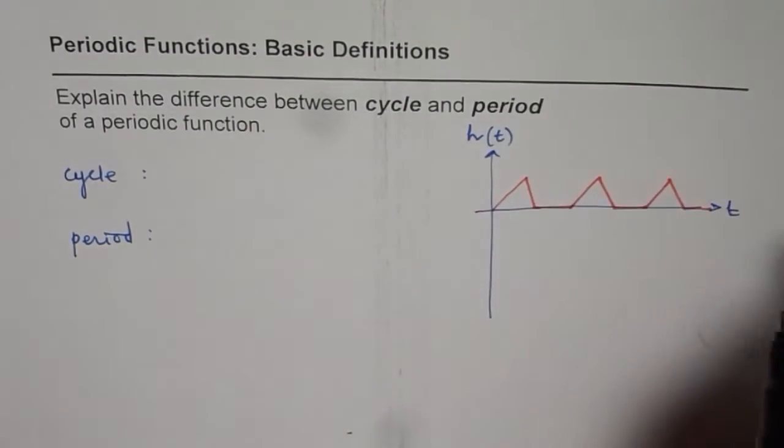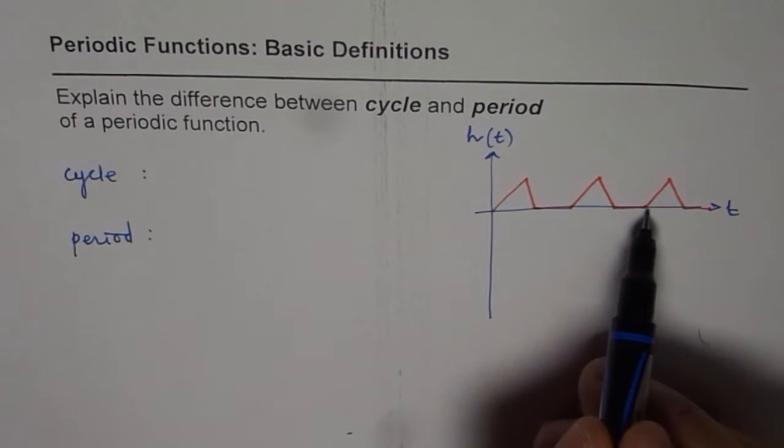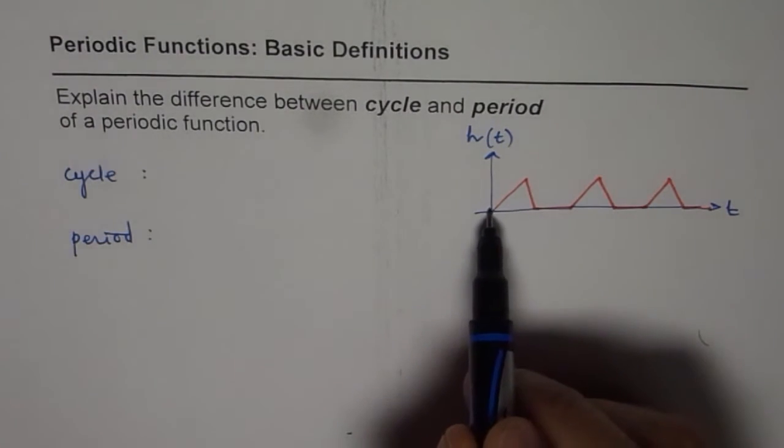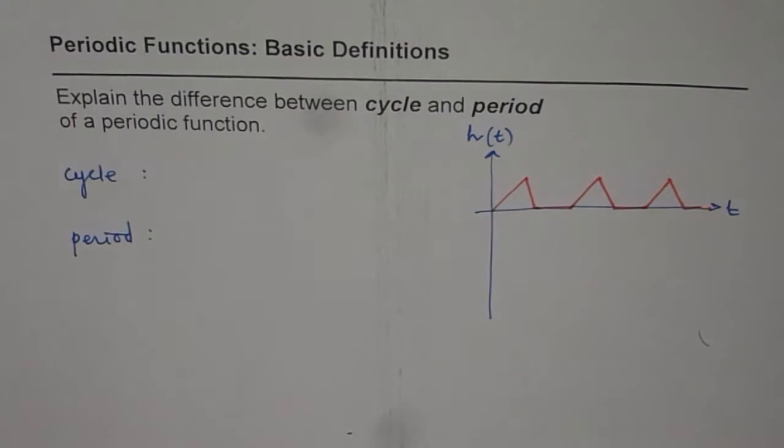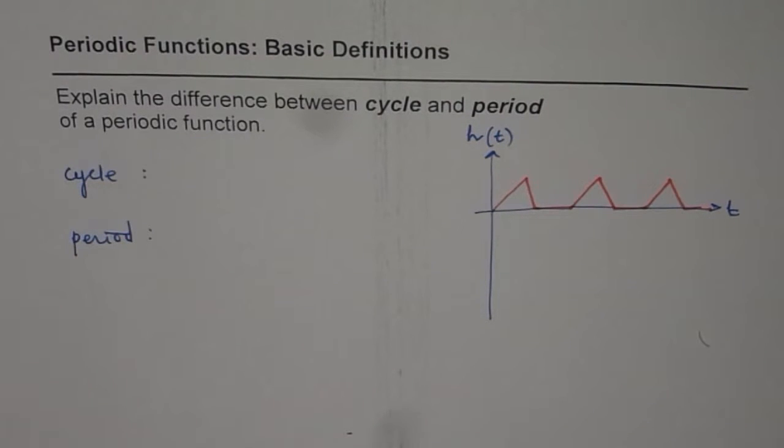In any function we have independent variable along the x-axis and dependent variable along the y-axis, and then you get a two-dimensional function on the paper. Now in this particular case, what is a cycle and what is a period? To help you answer this question, let me tell you what is the cycle.